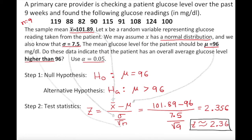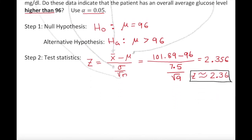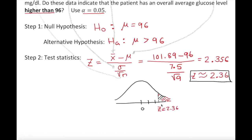Now let's draw a normal curve. We have 0 in the center and our Z value of 2.36 to the right. Because our alternative hypothesis says 'higher than,' we are looking at the right tail. So Z = 2.36 is about 2.36 standard deviations away from the mean. We need to find the area — the probability — in that right tail, which is the p-value.